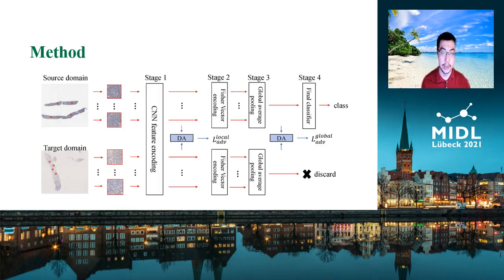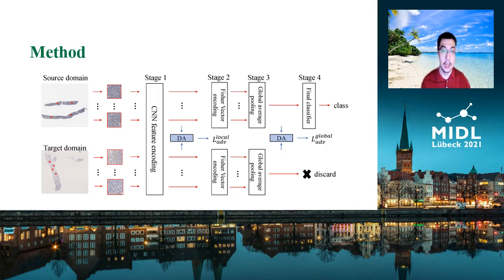Here is our integrated unsupervised domain adaptation solution. Our unsupervised learning approach does not need any labeling on the target domain. First, the Whole Slide Images from both source and target domains are randomly sampled and augmented. Then they are fed into a CNN for feature encoding. Afterwards, we forward the features to a domain classifier. This domain classifier works with patch-wise features and is responsible for adapting local distribution shifts on patches from different domains.